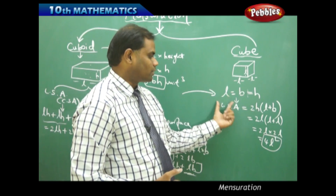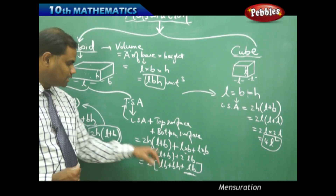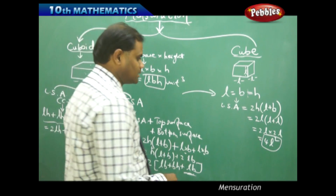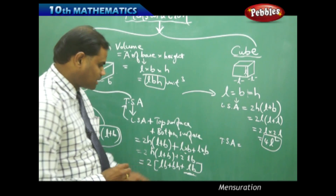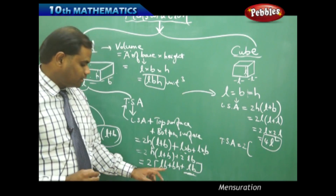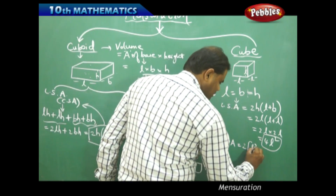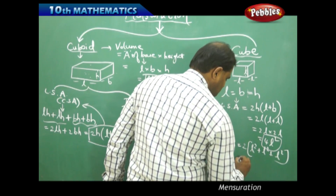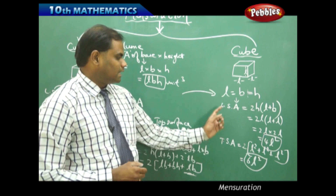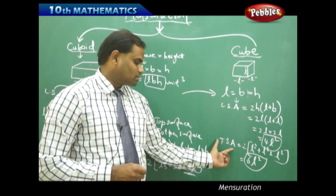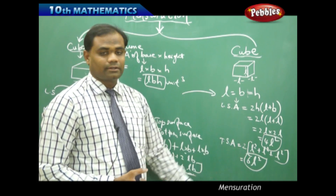Similarly, substituting B = H = L in the total surface area formula: TSA = 2(LB + BH + LH) becomes 2(L² + L² + L²) = 2 × 3L² = 6L². Therefore, the lateral surface area of a cube is 4L² and the total surface area is 6L².